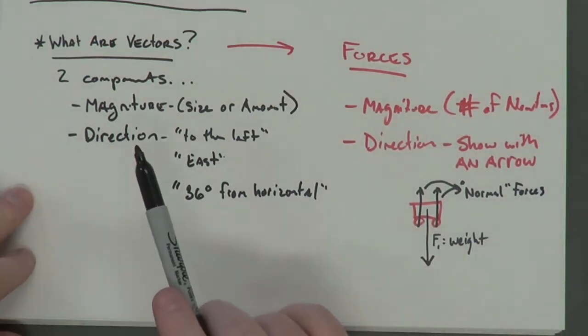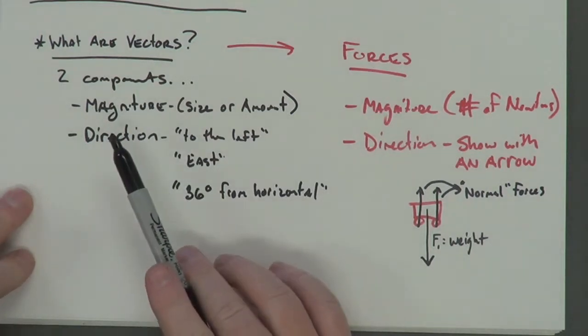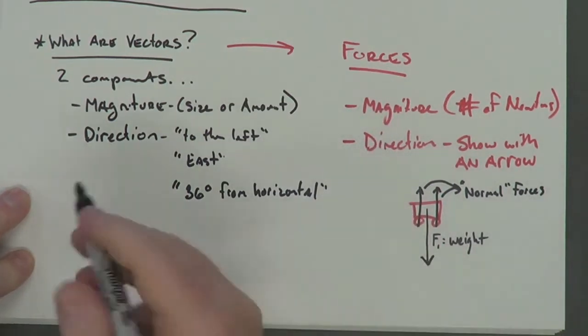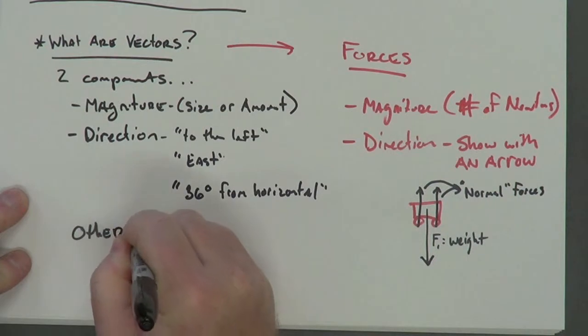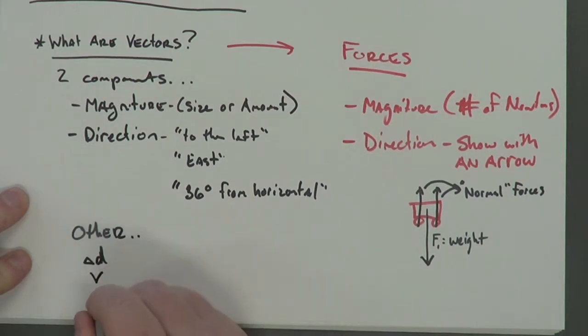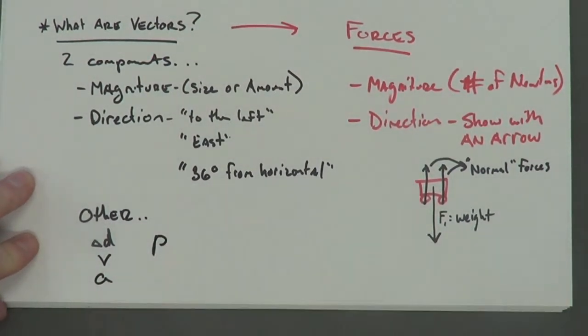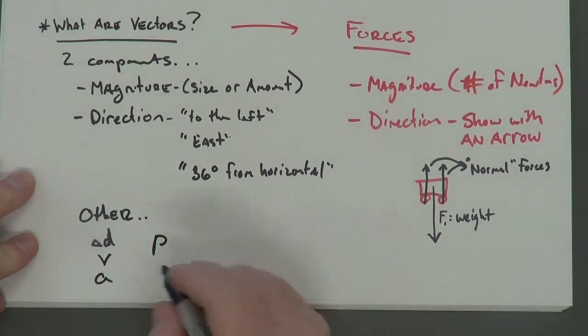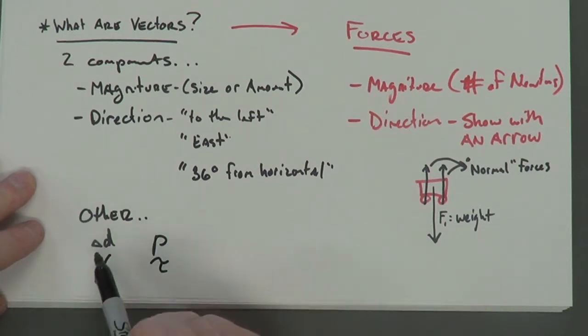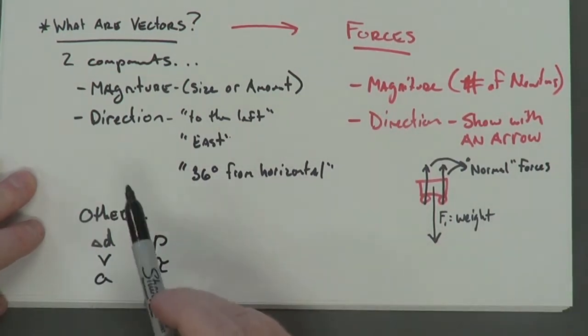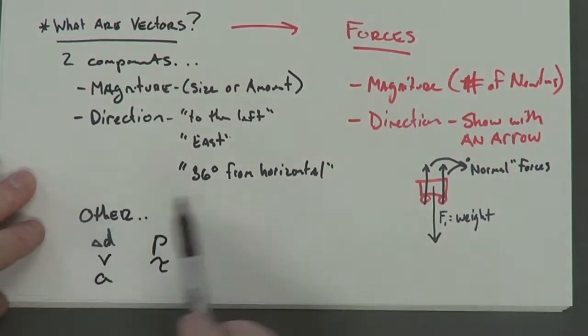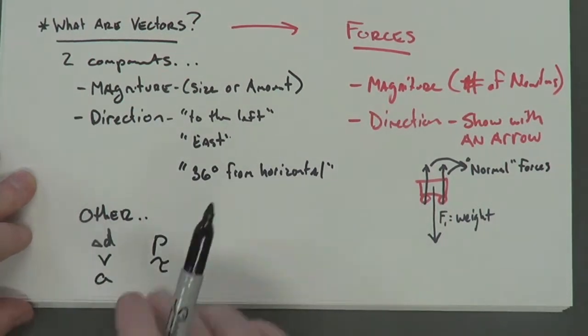But the basics are, vectors are something that has two components. In physics, those components are magnitude and direction. Forces are examples of vectors. You could also include other things, such as displacement, change in position, velocity, acceleration, momentum, which you'll talk about here in a little bit, torque is a vector. There's lots of other vectors in physics. So everything in physics breaks down to either a vector or a scalar. A scalar is something that only has one of these. It doesn't have direction, only magnitude. So vectors, two things, scalars, one thing, force, vector, got it? Got it. Good.